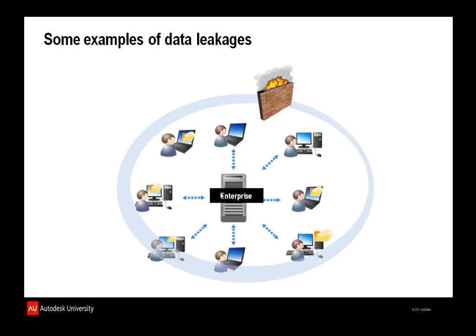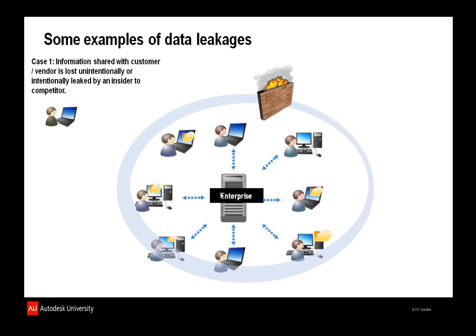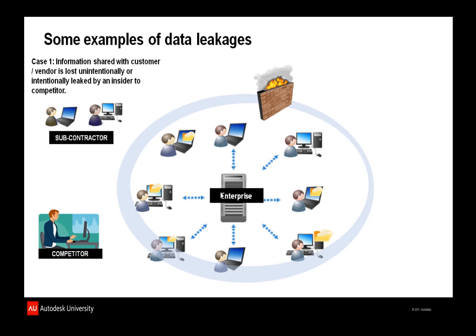Some examples of information leakage: the first is when information is shared with a customer or vendor and is lost either intentionally or unintentionally to a competitor. For example, a vendor or subcontractor could, in the process of handling a document, leak it out to a competitor, resulting in significant intellectual property loss.